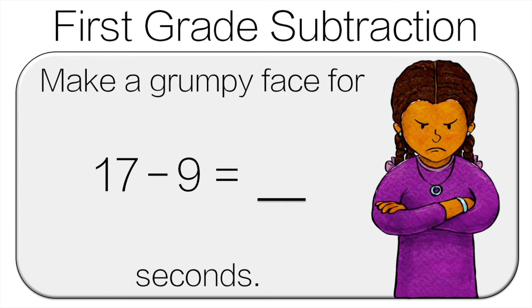We're gonna use a little trick here. It's always easier to subtract 10, and 10 is one more than 9. So we'll subtract 17 minus 10, which is 7, and then it has to be one more. So 8. Make a grumpy face for 8 seconds.